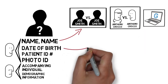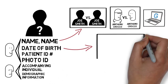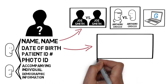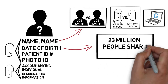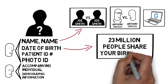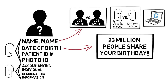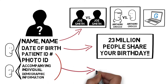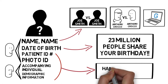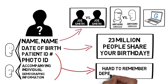The second most common patient identifier is date of birth. Did you know that around 23 million people share your birthday and the birthday of anyone you're caring for? Unfortunately, we cannot use date of birth alone for patient identification. The remaining patient identifiers are unique to a patient, but not easily memorized or depend on others, so should never be used alone.